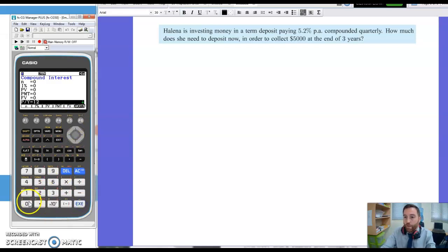So my payments per year or my compounding periods per year, if it's quarterly that means there are four payment periods per year. You can see it automatically updates the compounding periods there. What else have we got? 5.2% as the interest.